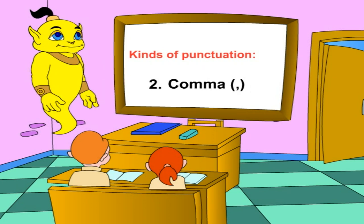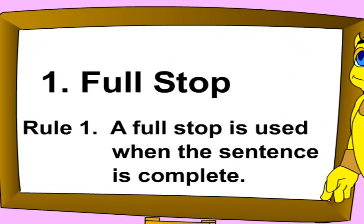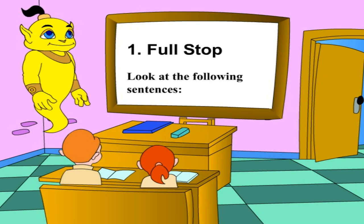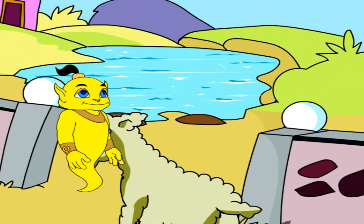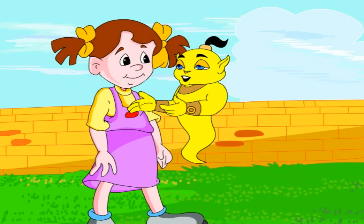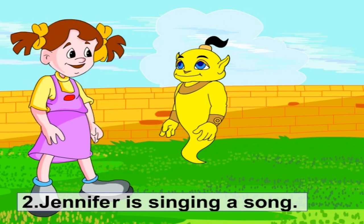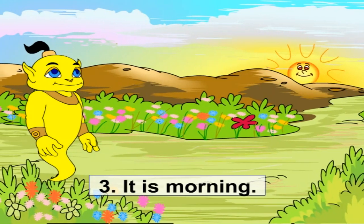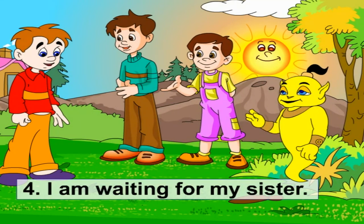Rule one: a full stop is used when the sentence is complete. Look at the following sentences. One: Pat jumps over the wall. Two: Jennifer is singing a song. Three: It is morning. Four: I am waiting for my sister.